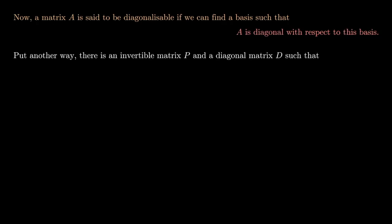Now a matrix A is said to be diagonalizable if we can find a basis such that A is diagonal with respect to that basis. Put in another way, we can find an invertible matrix P and a diagonal matrix D such that A can be written as P, D, P inverse.